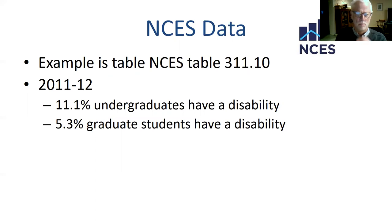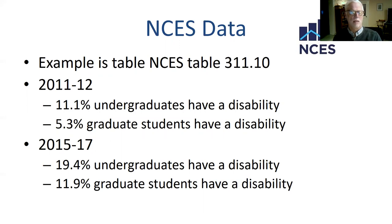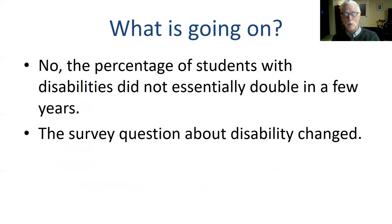The National Center for Education Statistics has sampling data from higher education, and it's interesting to see the changes over time. In 2011–2012, 11.1% of undergraduates had a disability by sampling, and 5.3% of graduate students had a disability. But between 2015 and 2017, that number grew from 11.1% to 19.4% of undergraduates — more than the number of high school students under IDEA. Graduate students rose to 11.9%. In my estimation, the percentage of students with disabilities cannot essentially double in a few years, so something must have changed.